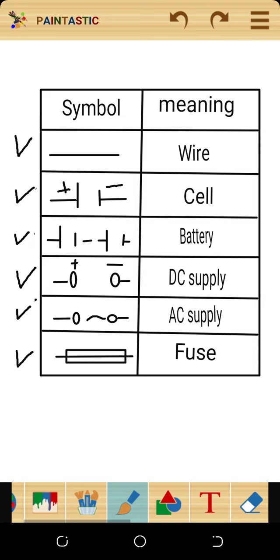The sixth symbol represents a fuse. The function of the fuse is that it glows or melts when current that flows through it exceeds a certain value.